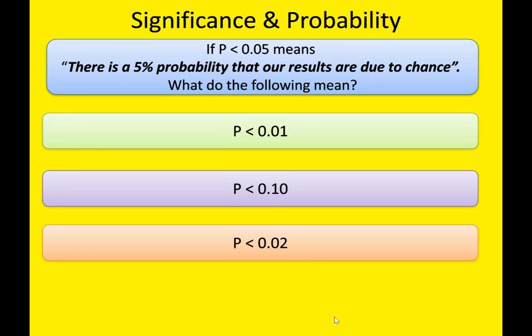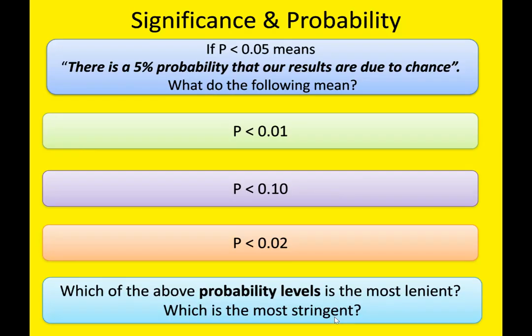p < 0.01 means there is a 1% probability the results are due to chance. p < 0.10 means there is a 10% probability the results are due to chance. And p < 0.02 means there is a 2% probability the results are due to chance. We have to consider which of those probability levels is the most lenient and which is the most stringent — what is the strongest level.